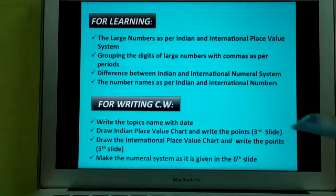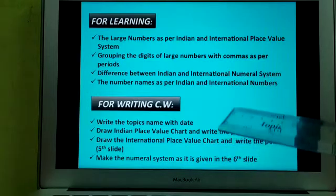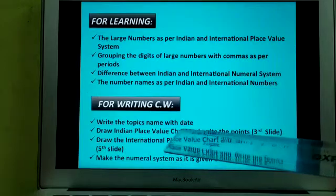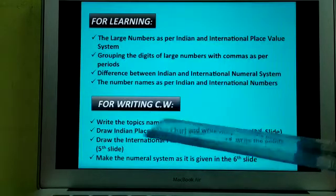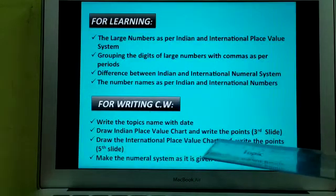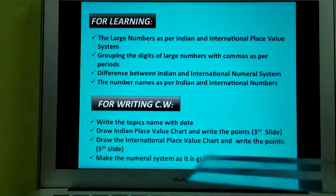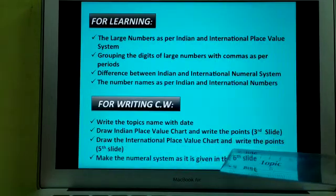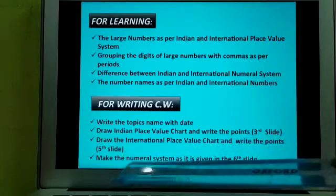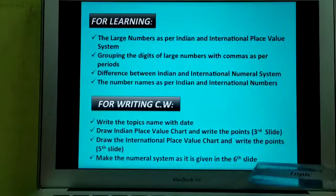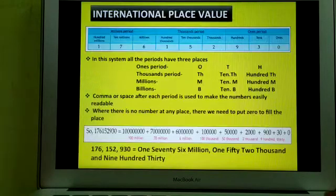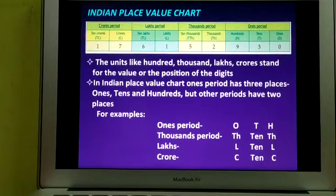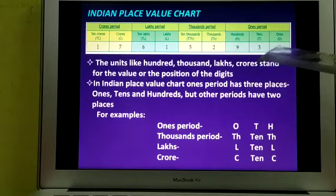Now for your classwork copy, this is very important - see it carefully. Write the topic name with the date. Then on a fresh page, start this chapter. Draw the Indian place value chart and write the points from the third slide. After that, draw the international place value chart and write the points from the fifth slide. Then make the numeral system comparison as given in the sixth slide. Draw this Indian place value chart and write the points with it.